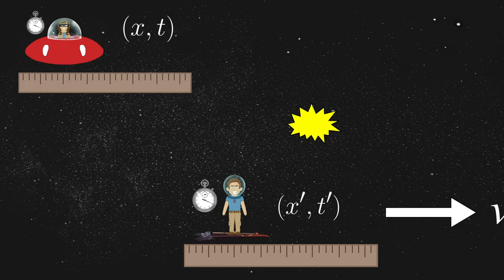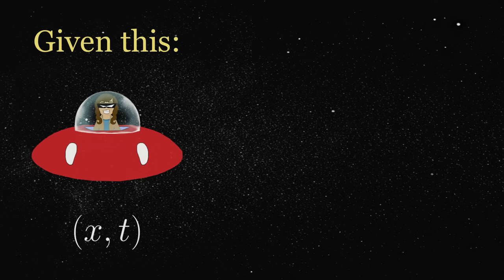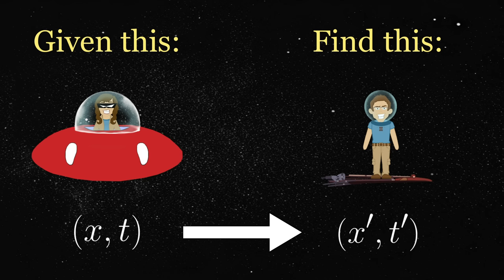But this raises an interesting question. Given Annie's measurement of some event, x, t, plus her velocity V relative to Jim, is it possible to calculate Jim's measurement, x' comma t' of the same event?